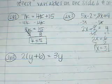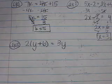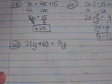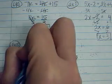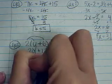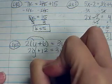2, and then in parentheses, y plus 6 equals 3y. We want to start by distributing. 2 times y is 2y, and 2 times 6 is 12. Remember, I multiply when I distribute. And that equals 3y.